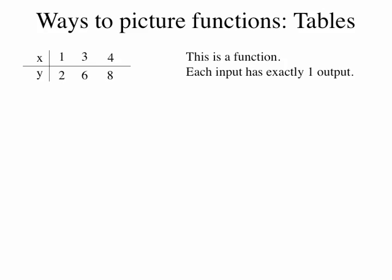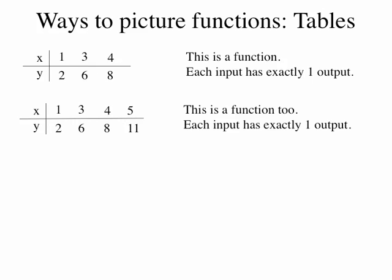This table represents a function because each of the inputs — 1, 3, and 4 — has exactly one output. What if we added another entry? If the next time I put in a 5 and I'm expecting 10 but instead get 11, even though this is strange, it's still a function. Each individual input still has exactly one output, and there's no case where I put the same number in twice and get different things out.